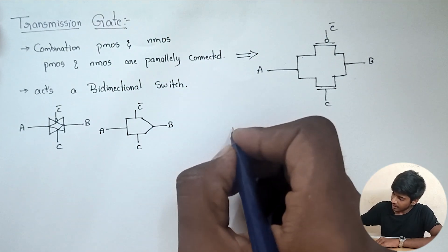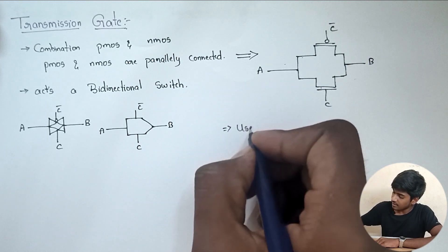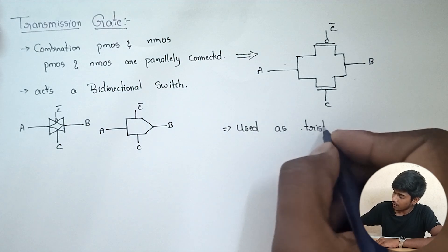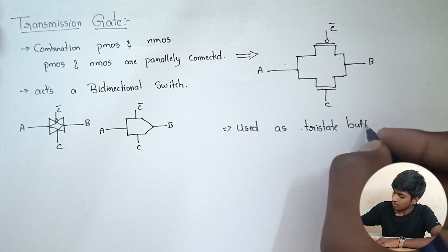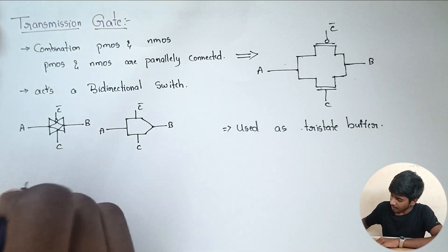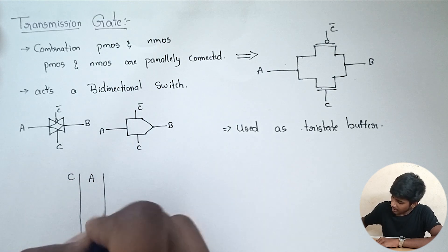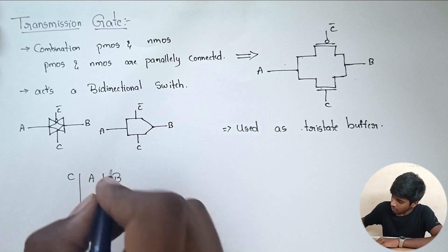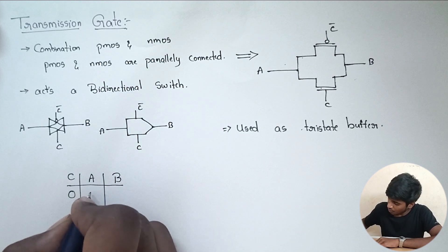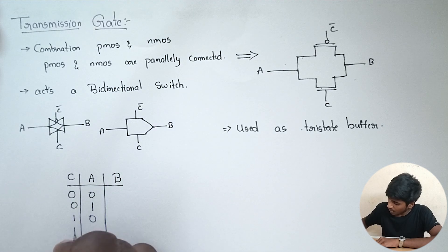Transmission gate is used as a tri-state buffer. So what do you mean by tri-state buffer? Here we have a control signal, an input signal A, and an output signal. The control signal can be 0 or 1.